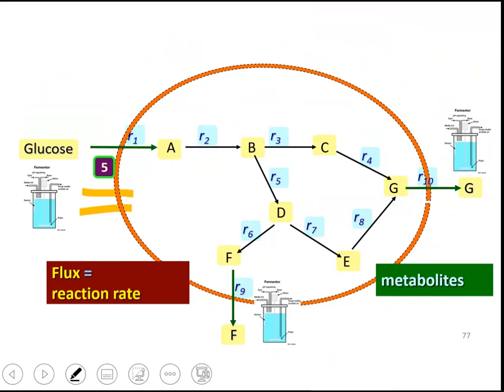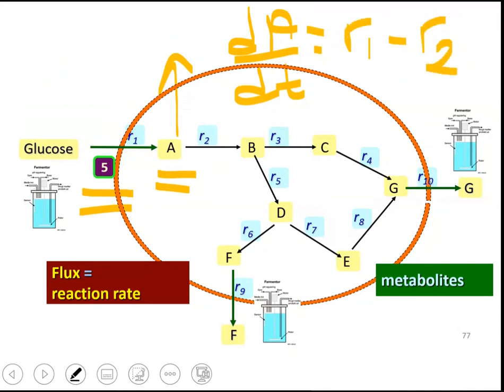If we assume steady-state-based modeling, which says that A will not accumulate in the cell over time, a balance around A, dA over dt, is r1 minus r2. A is produced by r1, consumed by r2. This will be equal to 0, which means r1 will be equal to r2, right? So at steady state, if this is 5, this will also be 5.